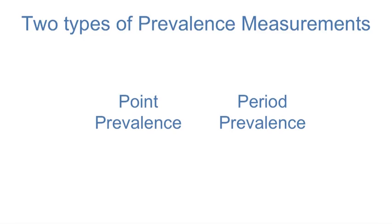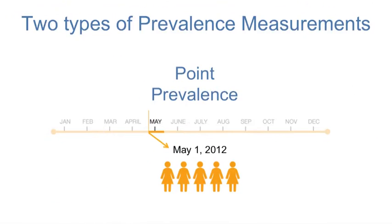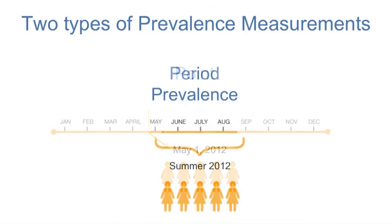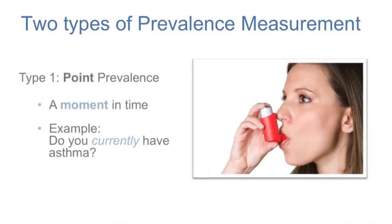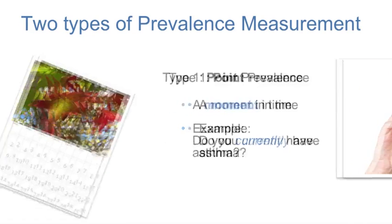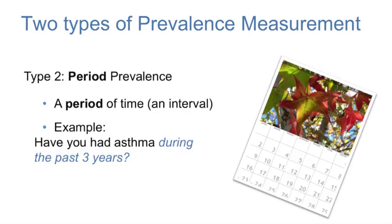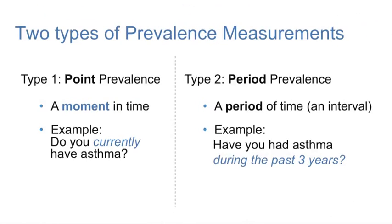There are two types of prevalence calculations: point prevalence, often just called prevalence, and period prevalence. Point prevalence is a prevalence at one point in time. Period prevalence is the number of people with a health outcome over a specified period of time divided by the number of people in the population during that time period. For example, in the summer of 2012, a point prevalence question would be 'Do you currently have asthma?' while a period prevalence question would be 'Have you had asthma during the past three years?' The only difference between point and period prevalence is the time period specified.